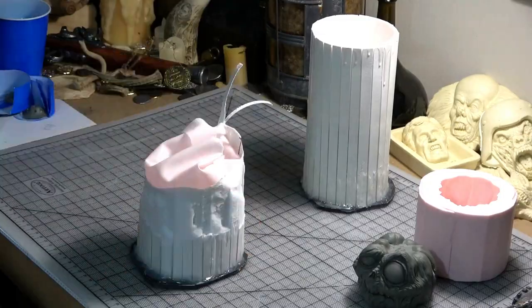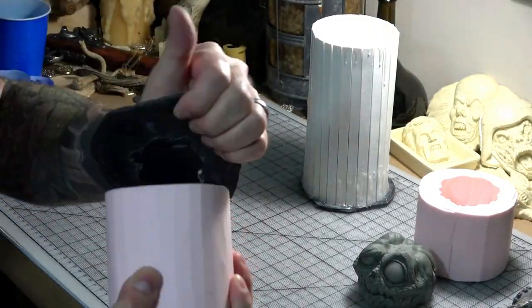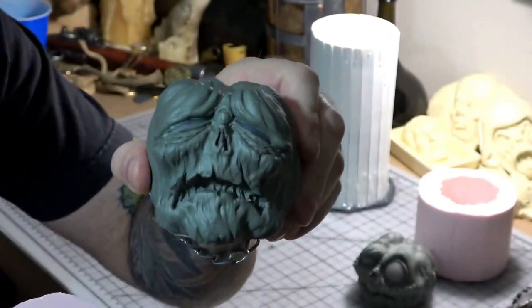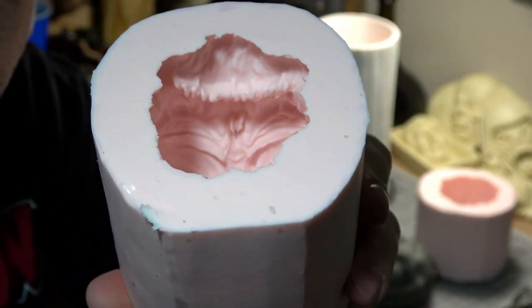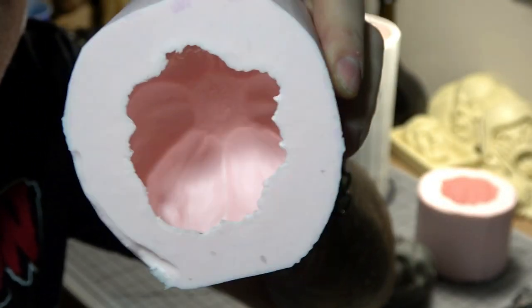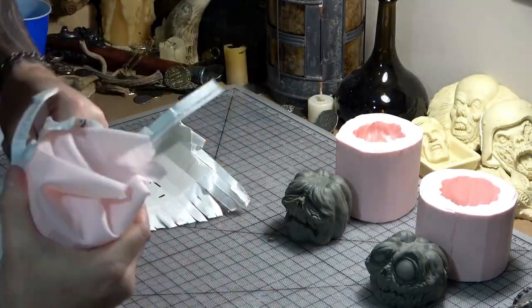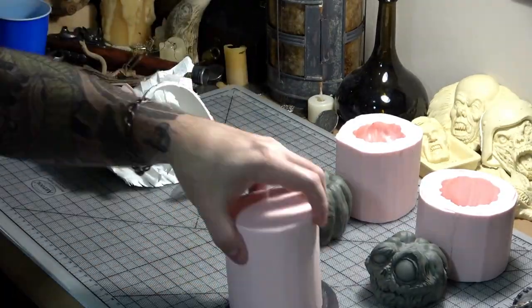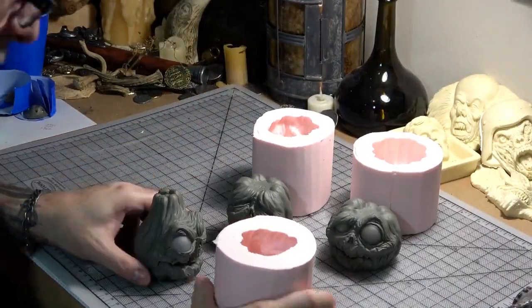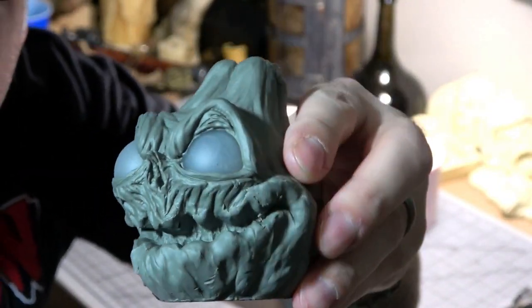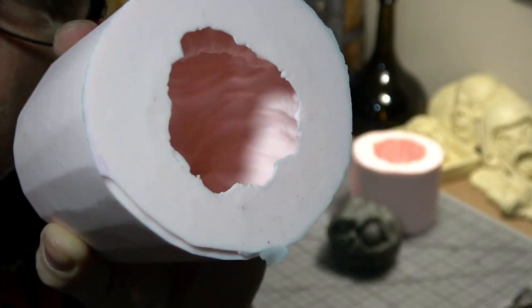So now I just open the other two molds. This is where using foam core for the walls really pays off. It peels off the silicone so easily. You can use cardboard like I mentioned, but the silicone likes to soak into the cardboard a bit and it's difficult to peel off.